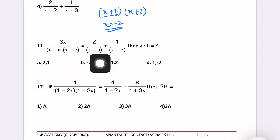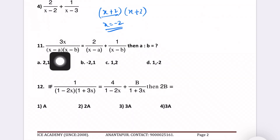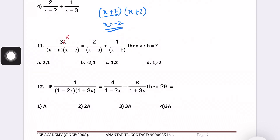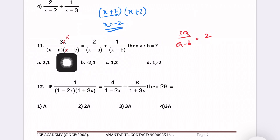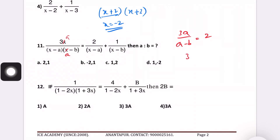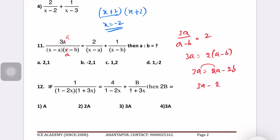Next question: 3x by (x minus a)(x minus b) equals 2 by (x minus a) plus 1 by (x minus b). Find a and b values. Set x minus a equal to 0, x equals a. Close the remaining place, substitute a: 3a by (a minus b) equals 2. So 3a equals 2(a minus b), giving 3a equals 2a minus 2b, then a equals 2b. Therefore a by b equals 2 by 1. The right answer is 2.